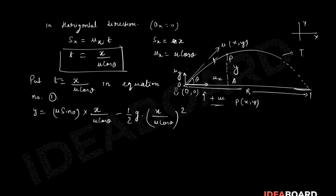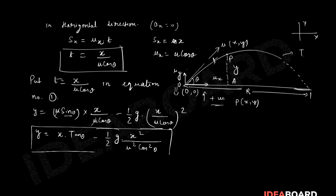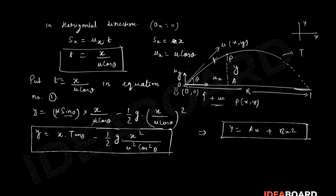Simplifying: the u's cancel in the first term, giving x tan θ. In the second term we get −(g x²) / (2u² cos²θ). So the equation of trajectory is: y = x tan θ − gx² / (2u² cos²θ). You can compare this with y = ax + bx², confirming it is a parabolic, quadratic equation.